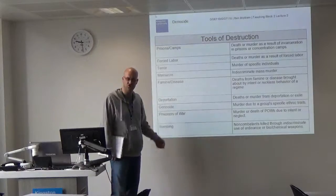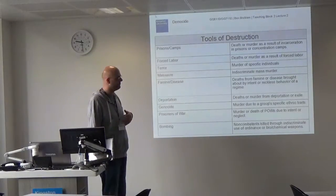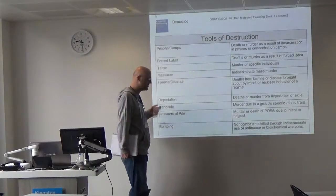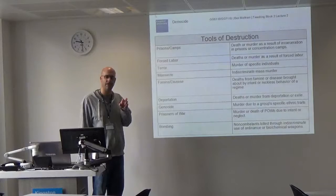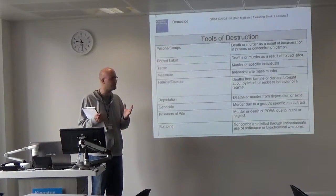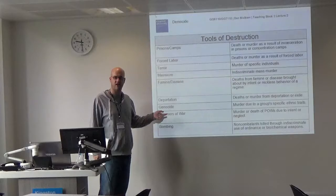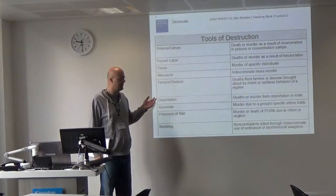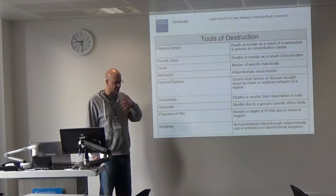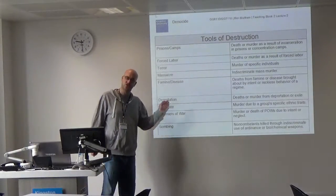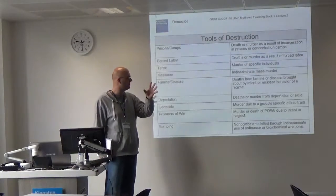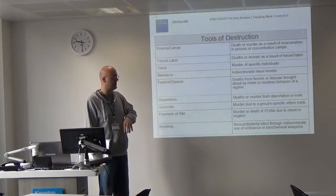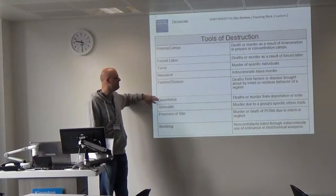Deportation. The Armenian genocide: during the First World War, the Ottoman Empire came to distrust the Armenian population within it — very much the same as the Nazi government distrusting the Jews. They viewed the Armenians as seditious fifth-column elements within their society. So the government expelled them from Turkey into the deserts of Syria, where they died in their millions — hundreds of thousands, a million or more, many, many people.